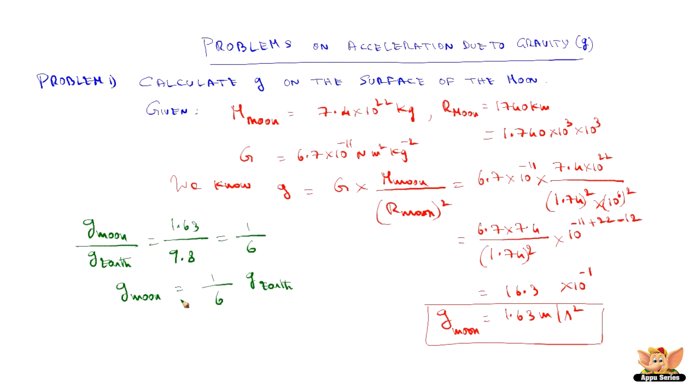It means that g moon acceleration due to gravity is 1/6 of g earth. Because the mass and radius of the moon are smaller since it is depending on mass and radius of the moon.